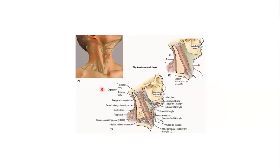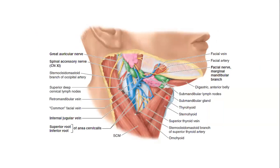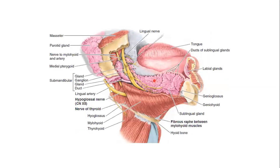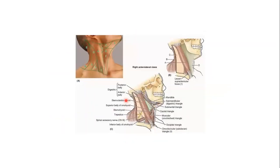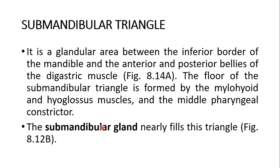The triangle contains, of course, the submandibular gland — you can see the submandibular gland, and also the submandibular lymph nodes present in the triangle. Almost this triangle is filled by this submandibular gland. This is the submandibular gland lying right in this triangle. I also wanted to show these muscles again: this is the mylohyoid and also the hyoglossus. Mylohyoid and hyoglossus forming the floor — deep over here — the mylohyoid and hyoglossus muscles form the floor of the submandibular triangle, along with the middle pharyngeal constrictors.